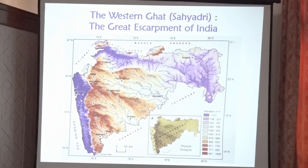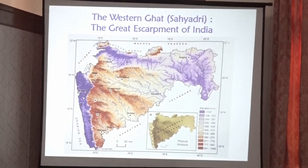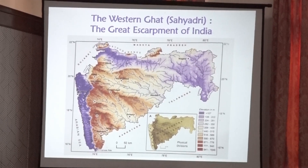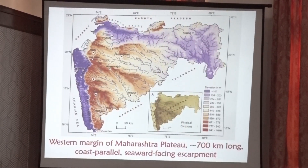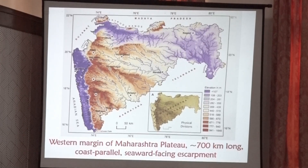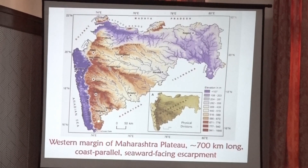The second division is the Western Ghats, commonly known as Sayadri, which is the Great Escarpment of India. The Western Ghats margin starts from south of the Tapi River near Navapur and extends up to the Kolhapur district of Maharashtra, running for about 700 kilometers. It is parallel to the Konkan coast and the escarpment is sea-facing.